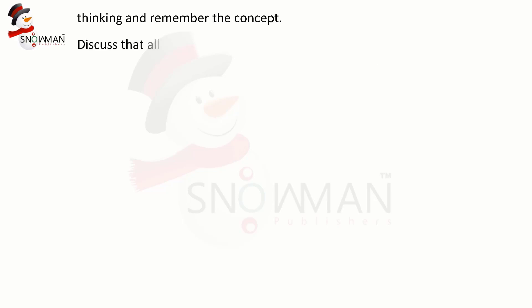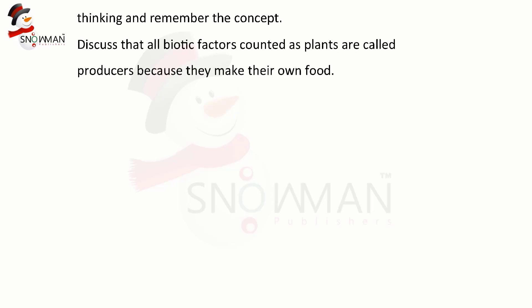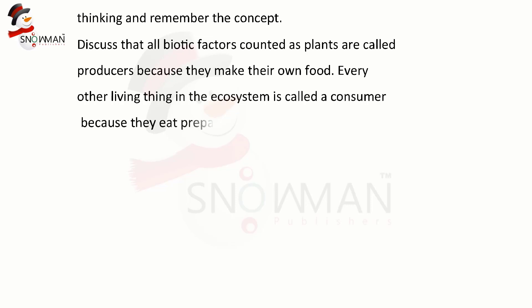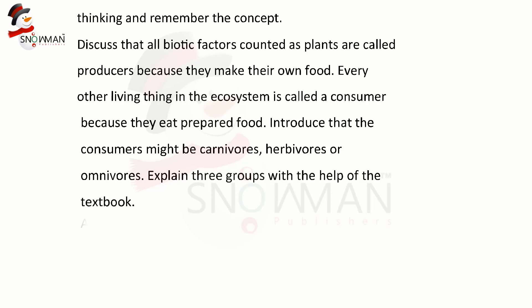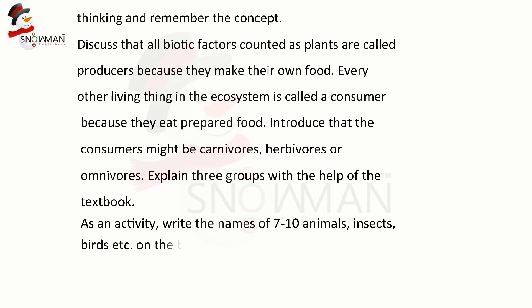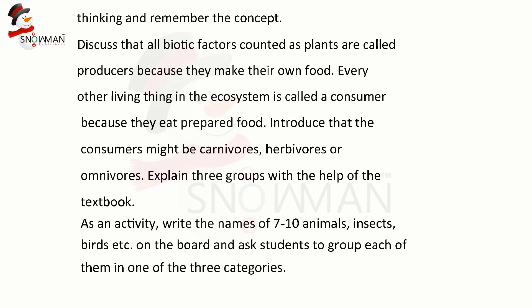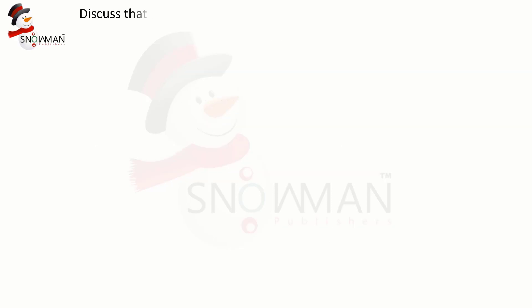Discuss that all biotic factors counted as plants are called producers because they make their own food. Every other living thing in the ecosystem is called a consumer because they eat prepared food. Introduce that the consumers might be carnivores, herbivores, or omnivores. Explain these three groups with the help of the textbook. As an activity, write the names of seven to ten animals, insects, birds, etc. on the board and ask students to group each of them in one of the three categories. If they give a wrong answer, correct them and explain the reasons politely.